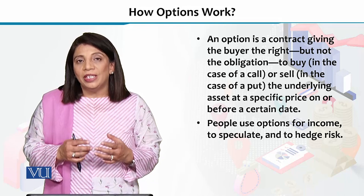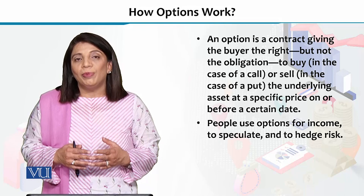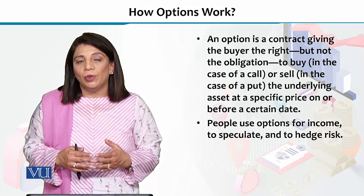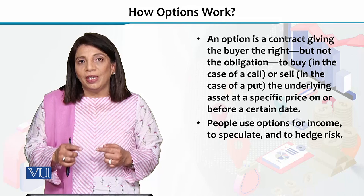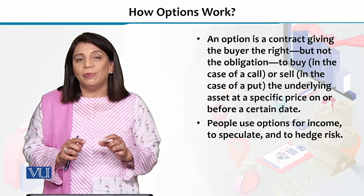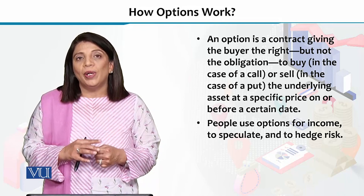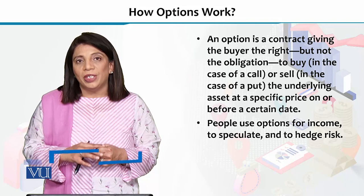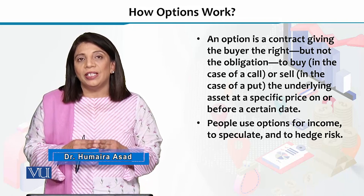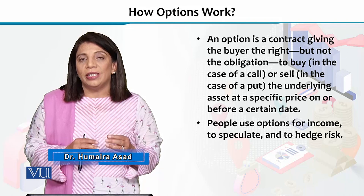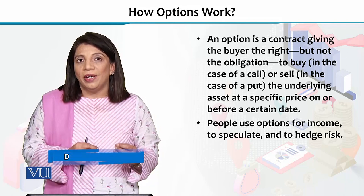Option, jaise ke naam iska batata hai, ke yeh ek contract hai, jis mein buyer ko yeh right diya jata hai ke woh ek certain time period ke baad — jo pre-specified date hai, jisko hum maturity date kehte hai — uske upar ek pre-specified, pehle se maloom hui, mutayyan hui price ke upar ek certain financial instrument ko buy kar sakta hai.